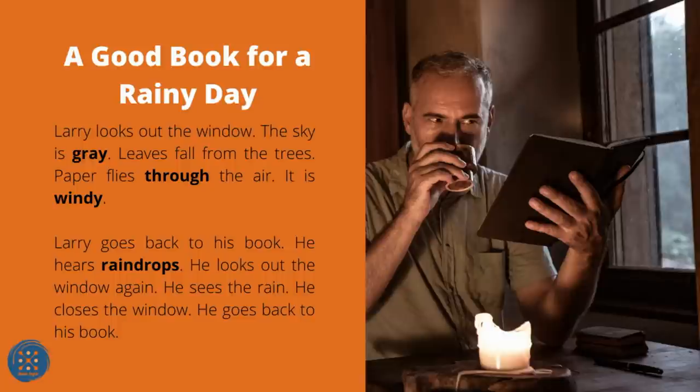A Good Book for a Rainy Day. Larry looks out the window. The sky is gray. Leaves fall from the trees. Paper flies through the air. It is windy. Larry goes back to his book. He hears raindrops and looks out the window again. He sees the rain. He closes the window and goes back to his book.